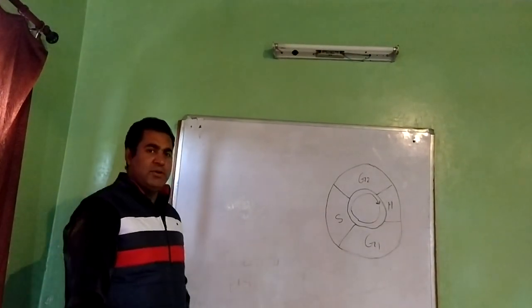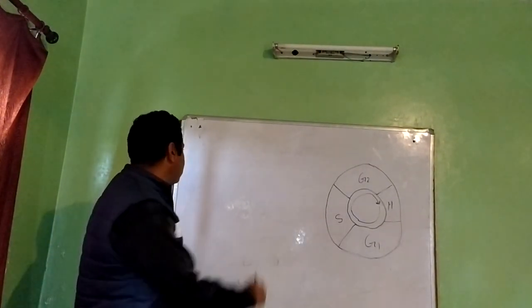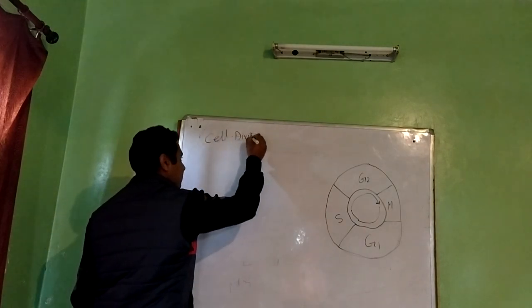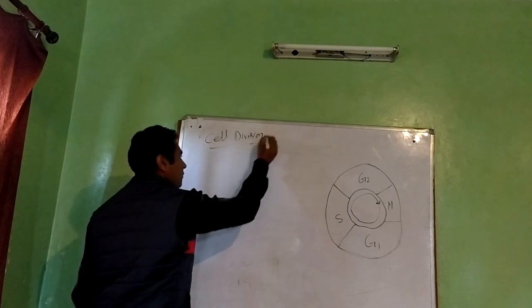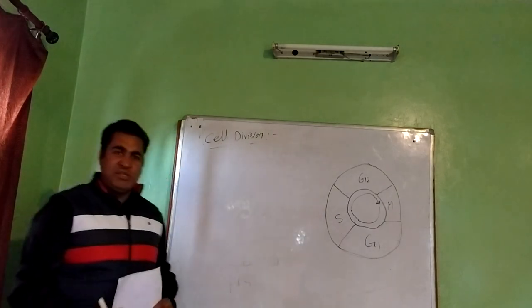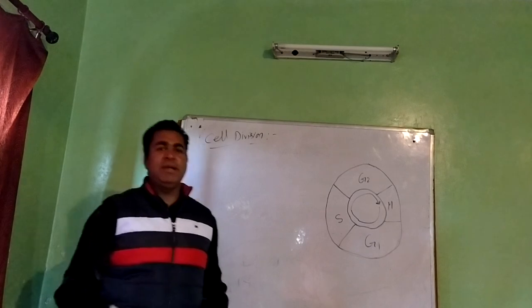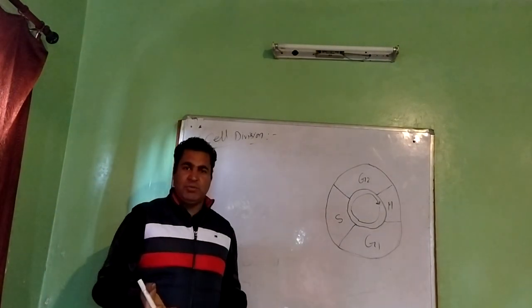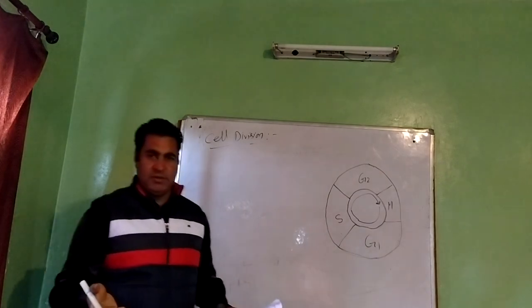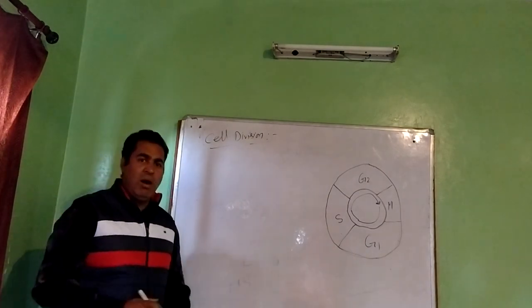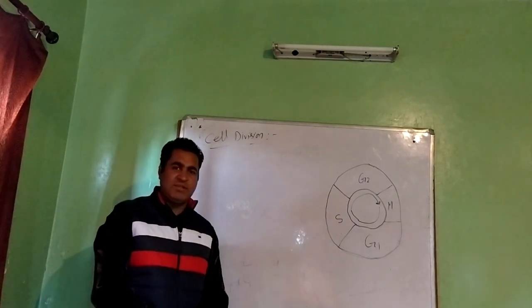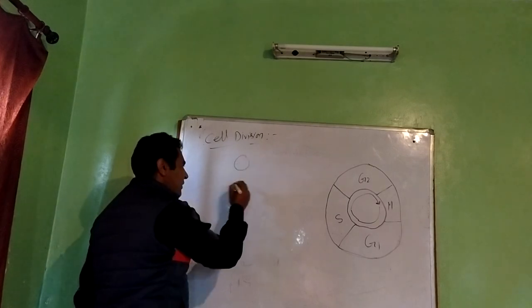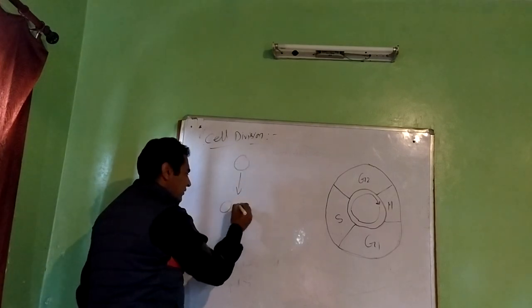Good morning, today I'm going to discuss cell division. Any multicellular organism, be it a complex organism like an elephant, human, or an oak tree, all are composed of millions or billions of cells. These cells actually originated from a single cell.